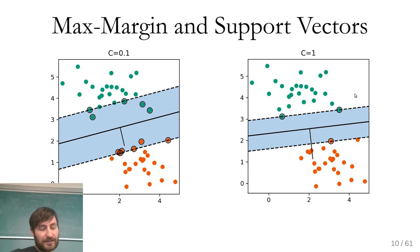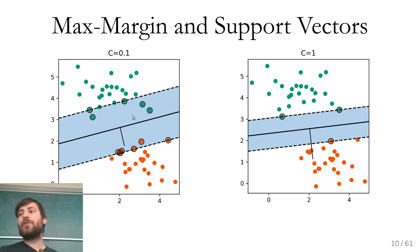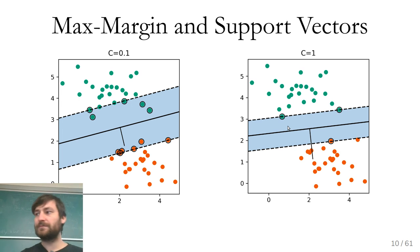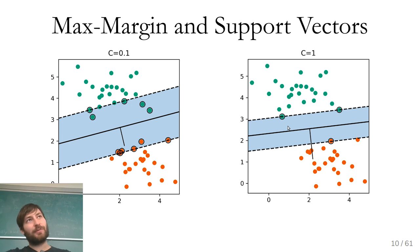The interpretation here is similar to logistic regression: regularization limits the influence each individual point can have. With more regularization, you care less about points within the margin. With less regularization, you care more about the points in the margin — these three support vectors can perfectly determine the whole model. With little regularization, you want to push stuff outside the margin a lot, making the margin smaller. With more regularization, you're okay with some stuff in the margin, making the margin wider.